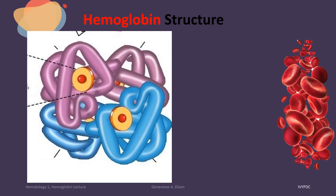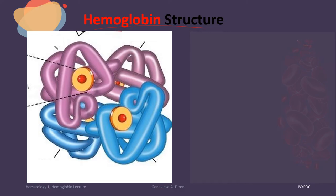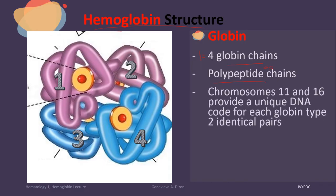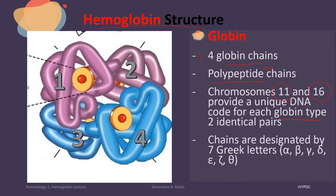So that is basically it about the hemoglobin structure, but let's talk about the globin part a little bit more. One hemoglobin is made up of four globin chains, and there are different types of these globin chains. Each chain is a polypeptide chain because it is made up of a sequence of amino acids. The genetic code that gives the different types of globin chains may be found in chromosome 11 and chromosome 16. These different types of globin chains are designated by Greek letters, and there are seven of them: alpha, beta, gamma, delta, epsilon, zeta, and theta.